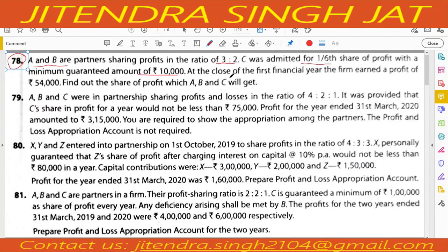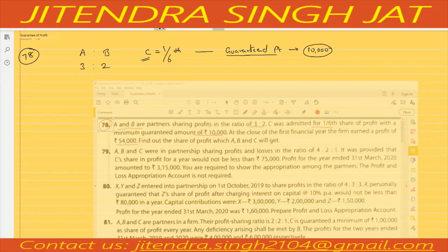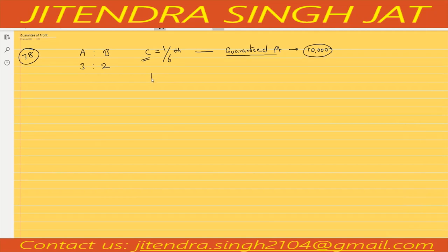At the close of the first financial year the firm earned a profit of 54,000. We need to find out the share of profit of A, B, and C. First, out of 54,000 we will calculate C's share.